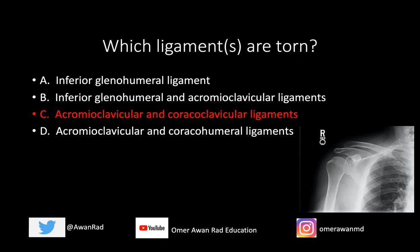This is a grade three acromioclavicular joint injury with tearing of the acromioclavicular and coracoclavicular ligaments. In a busy ED, when you're looking at the shoulder, it's tempting to note that the glenohumeral joint is intact — no fracture, no dislocation — and move on. But this is a very serious injury, and if you're going fast, you may miss it.